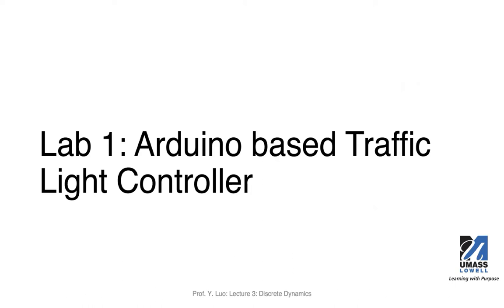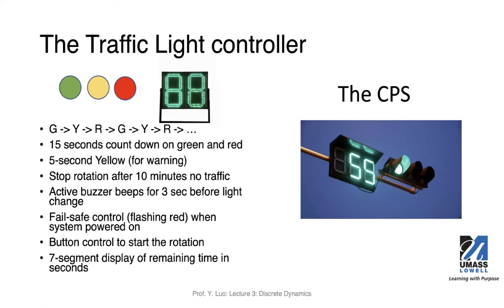That was a quick description of GPIO. In the next 20 minutes, I will talk about Lab 1 — a traffic light controller. To recap: we want a basic rotating pattern of green, yellow, red. We would like a 15-second countdown on green and red. So green stays on for 15 seconds, followed by yellow for five seconds as a warning, then red for another 15 seconds.